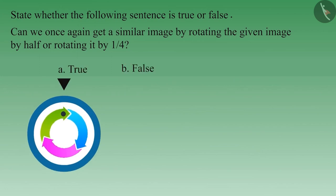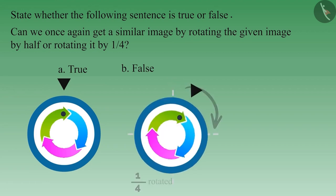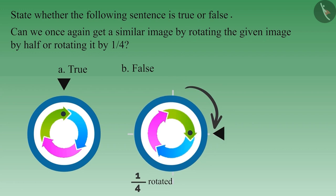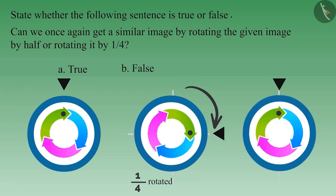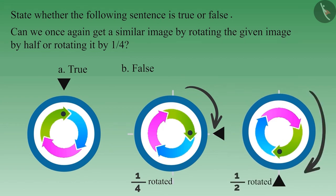Let's look at another example: can we get the same image by rotating the given image by half or by one-fourth? If your answer is yes, think again. If we turn this image by one-fourth, it will look something like this, and if we rotate the original image by half, it will look like this. Under no circumstance does it look like before — therefore this statement is false.